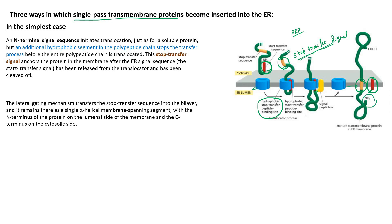In single-pass transmembrane proteins, the N-terminus sequence is oriented toward the lumen, while the C-terminus of the polypeptide chain is oriented toward the cytosol. The N-terminus faces the lumen because the N-terminus signal sequence acts as a start-transfer signal and enters the endoplasmic reticulum first. However, this is not always the case — there are two other mechanisms.